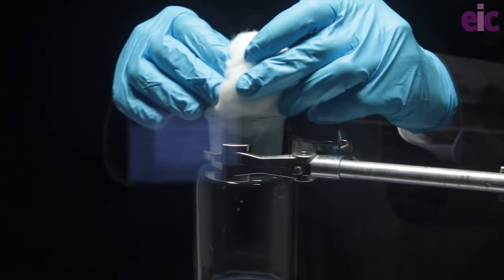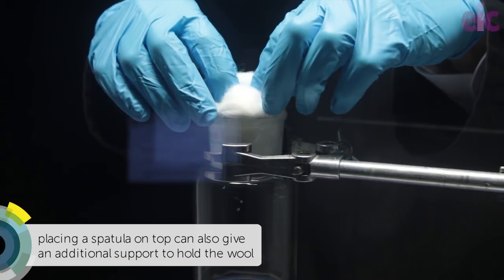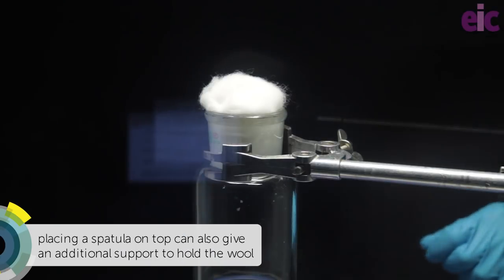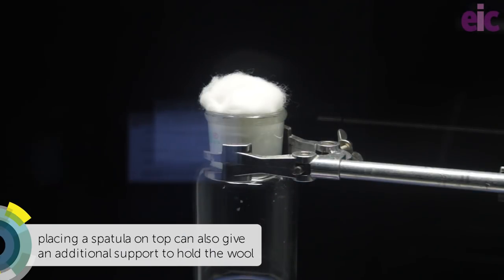A piece of mineral wool is used to lightly plug the neck of the flask, loose enough to allow the gases to escape, but secure enough to keep in the powder.